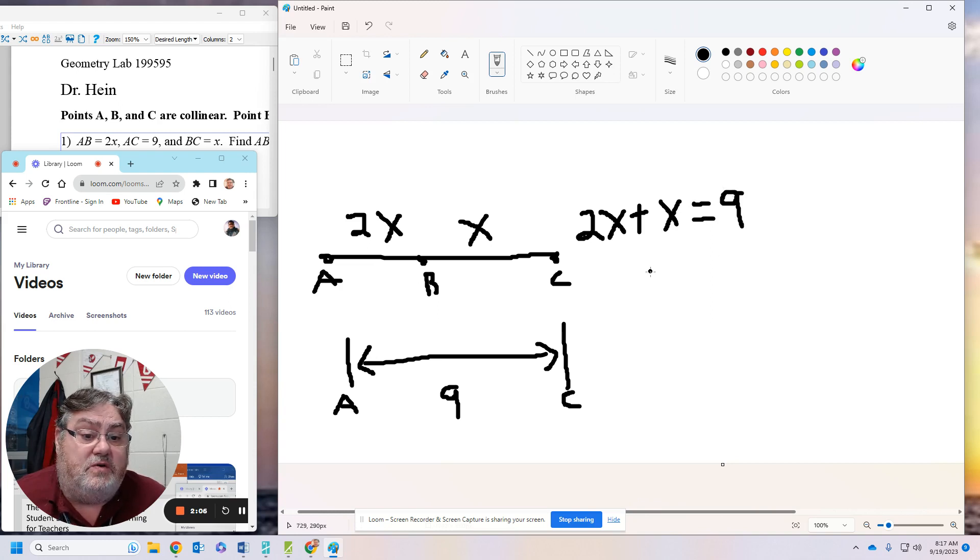Then I'm going to solve, combine like terms. I have 2Xs and 1X. That's 3Xs. So 3X equals 9.